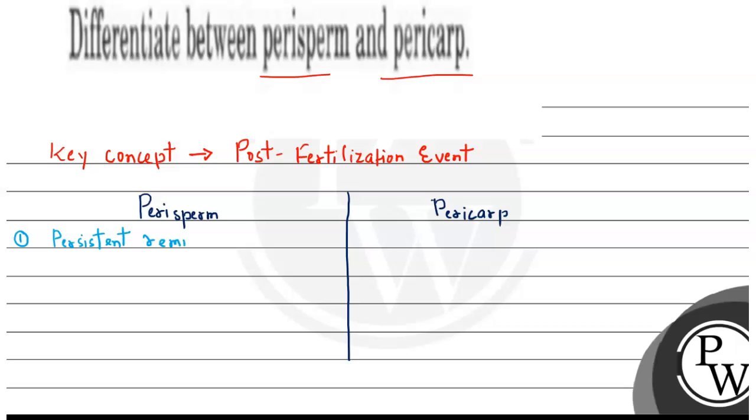The first difference: perisperm is the persistent remnant of ovule of the seed, while pericarp is formed by the wall of ovary.